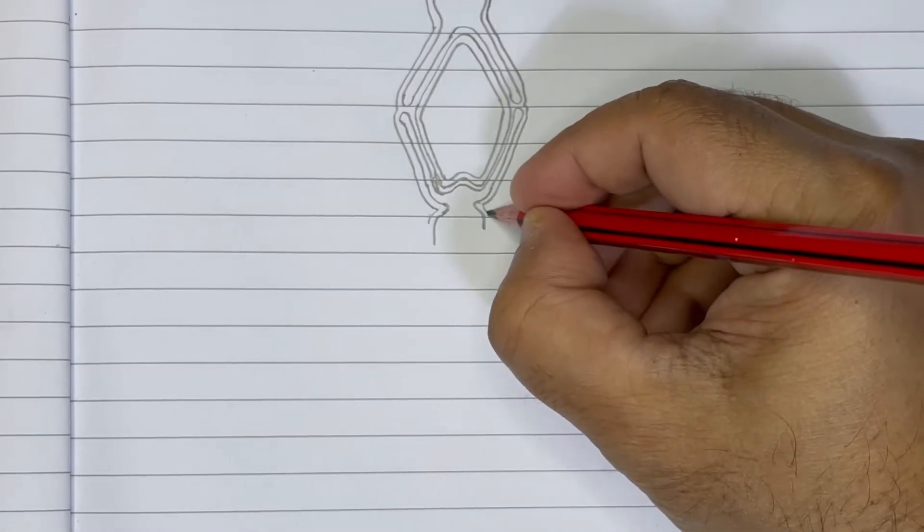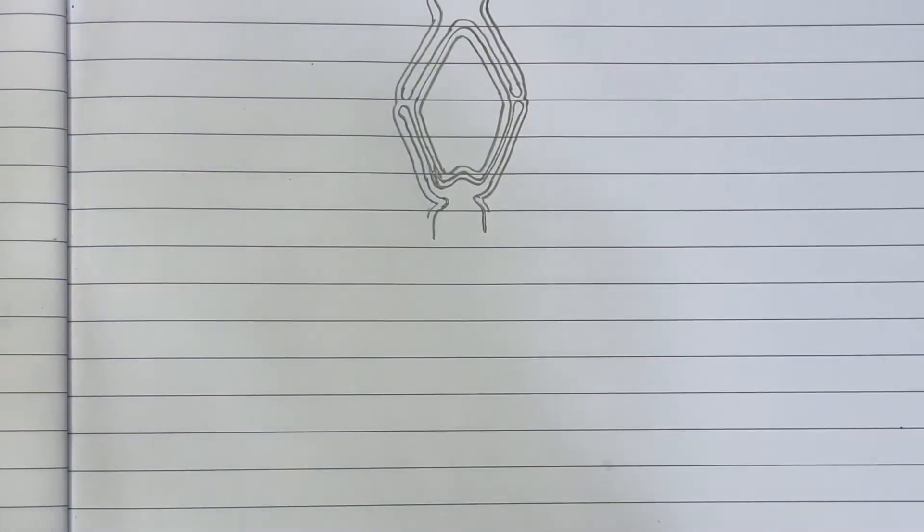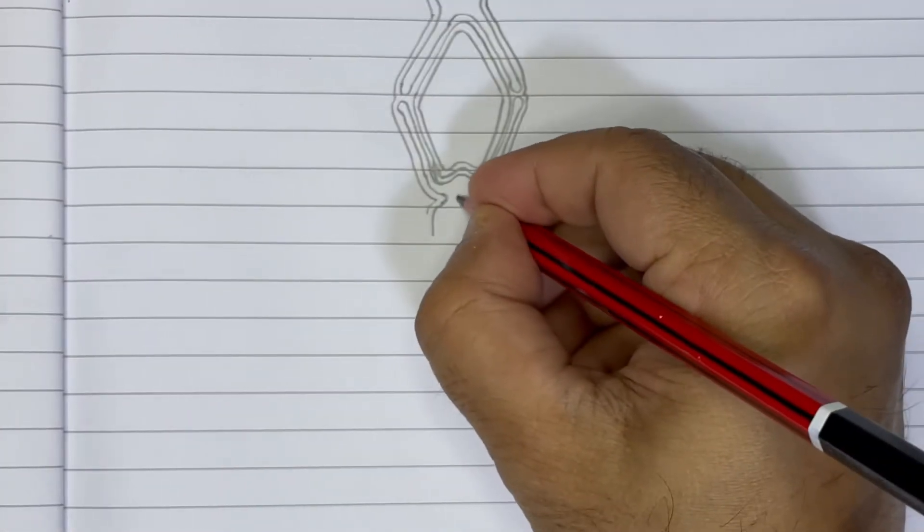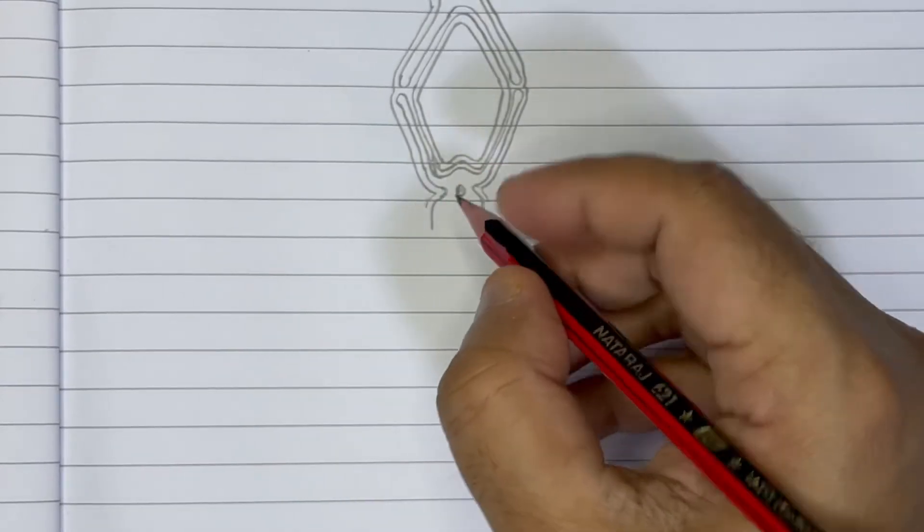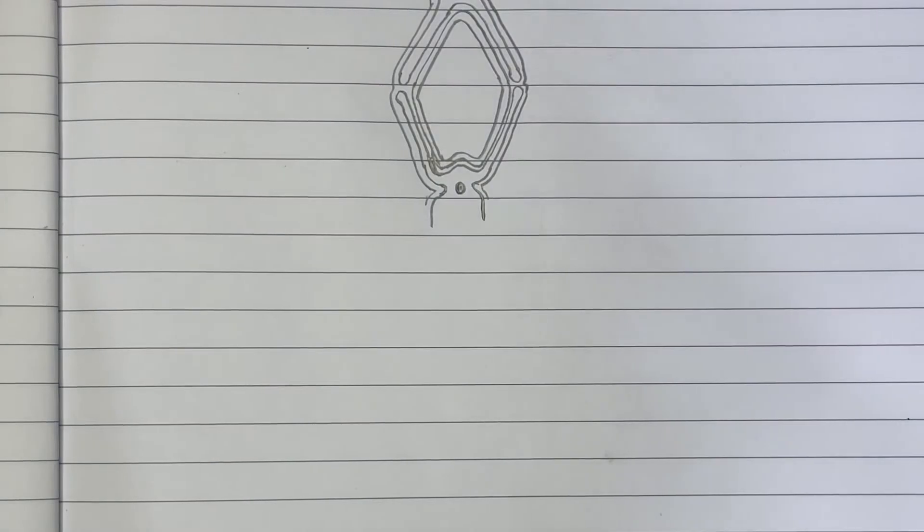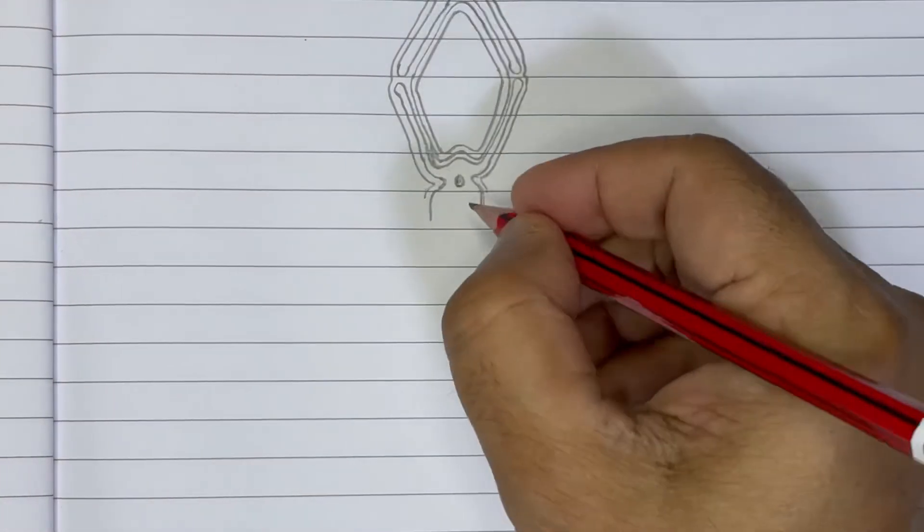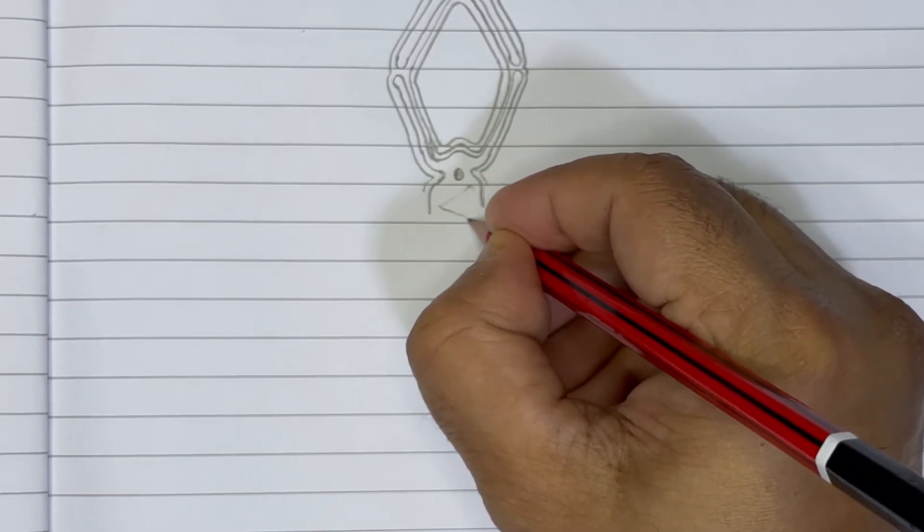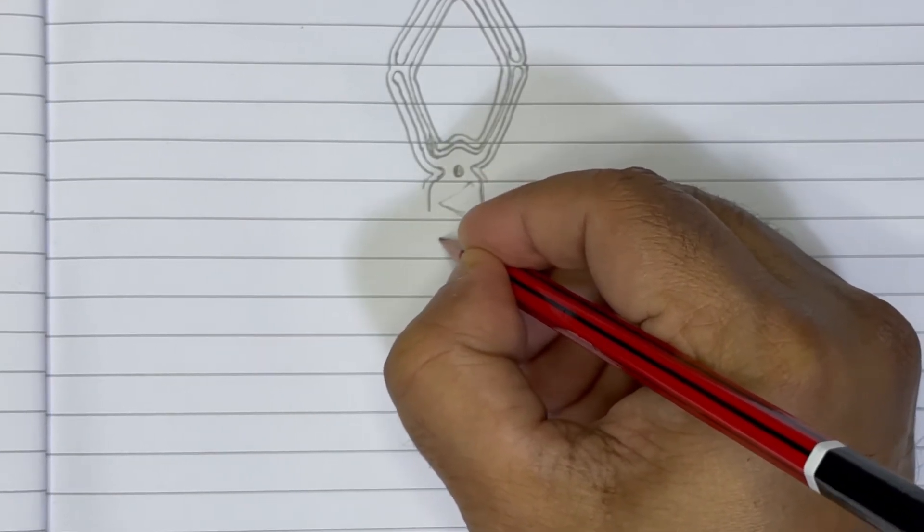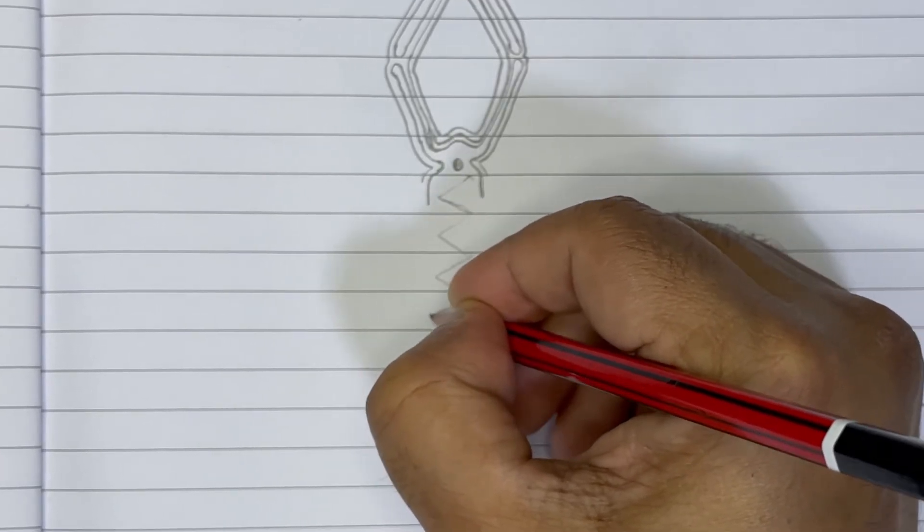Till the other end. Now we are going to draw the middle piece. For the middle piece, let's draw a small circle in the middle. Then we need to draw the vectorially arranged mitochondria.